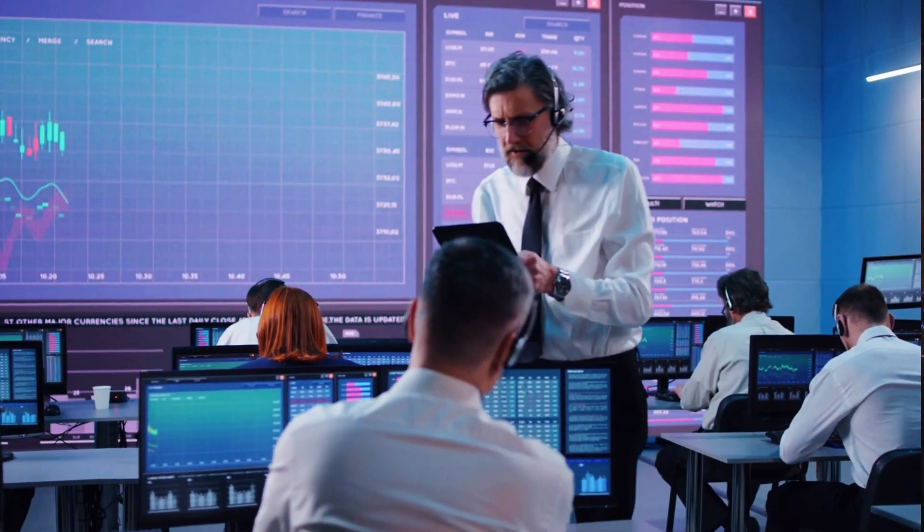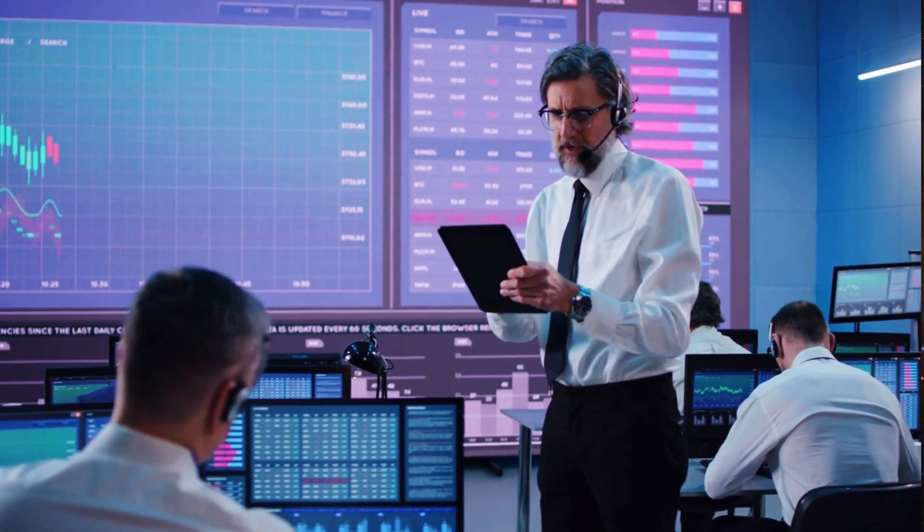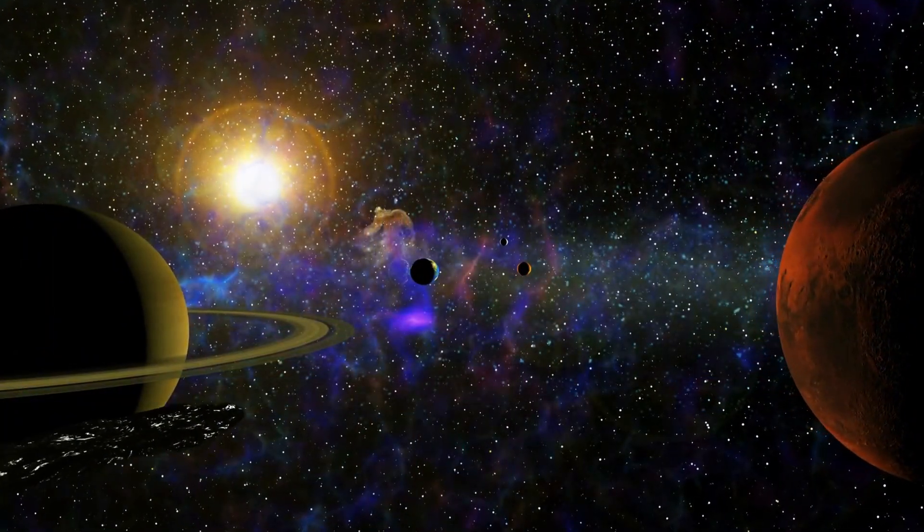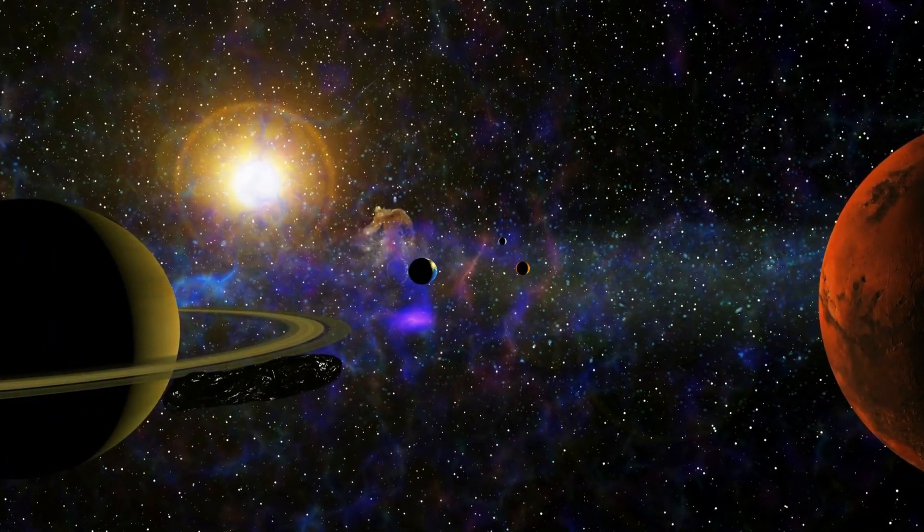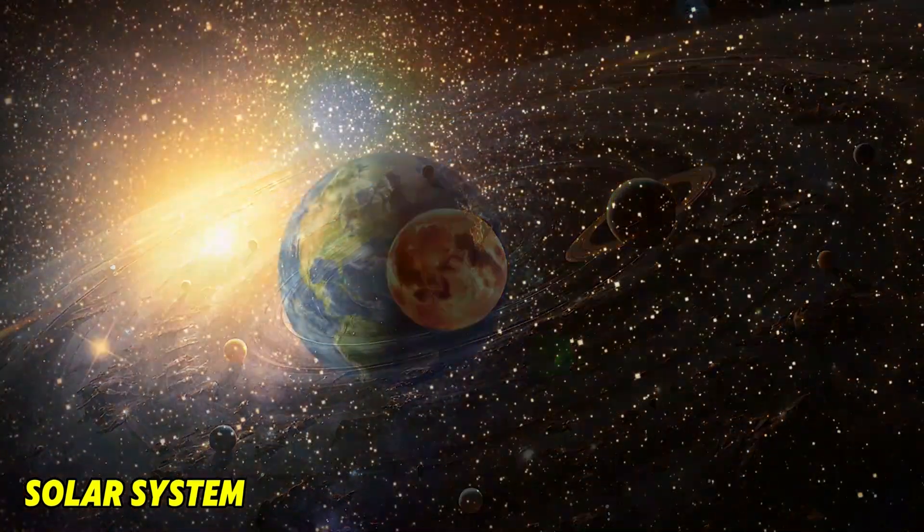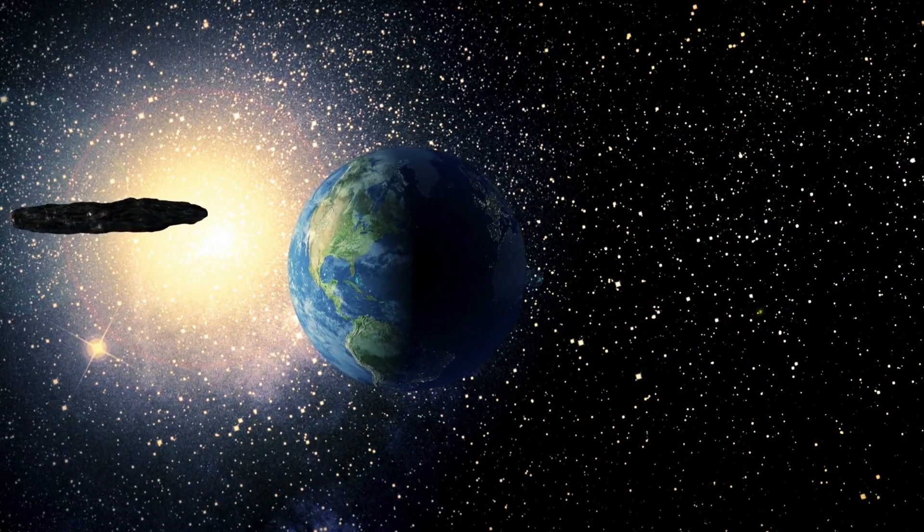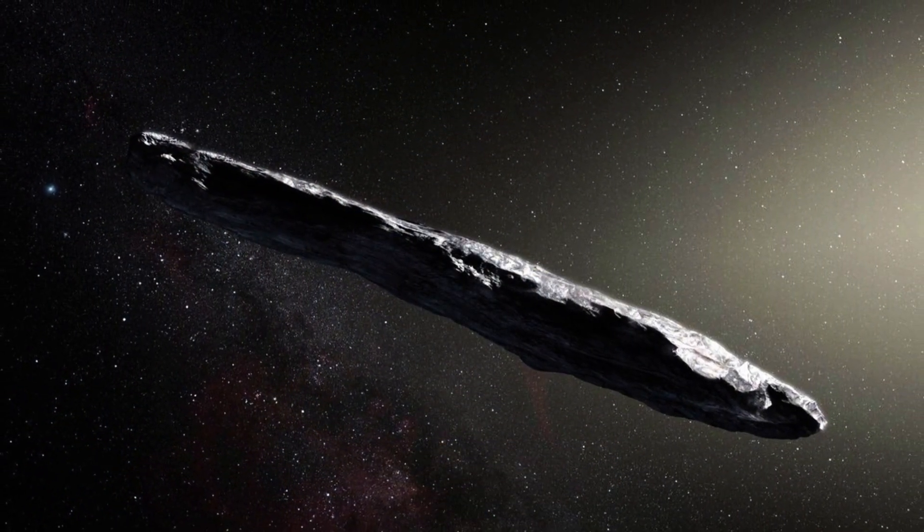This elongated, cigar-shaped object baffled scientists, with its lack of a visible comet tail and mysterious acceleration as it exited our solar system. Was it a fragment of a distant world, or could it be something even more extraordinary?